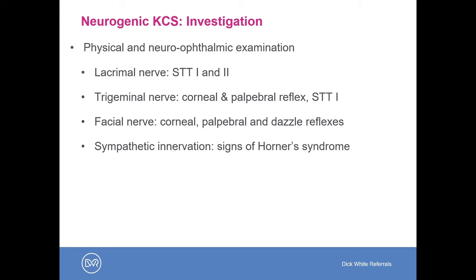When we perform the corneal reflex and the palpebral reflex, we are also assessing a branch of the trigeminal nerve. In the corneal, palpebral, and dazzle reflexes, we are testing the efferent component of the reflex arc — the facial nerve. Sympathetic signs may be present in animals with Horner's syndrome: miosis, third eyelid protrusion, ptosis (drooping of the lower eyelid), and enophthalmos.